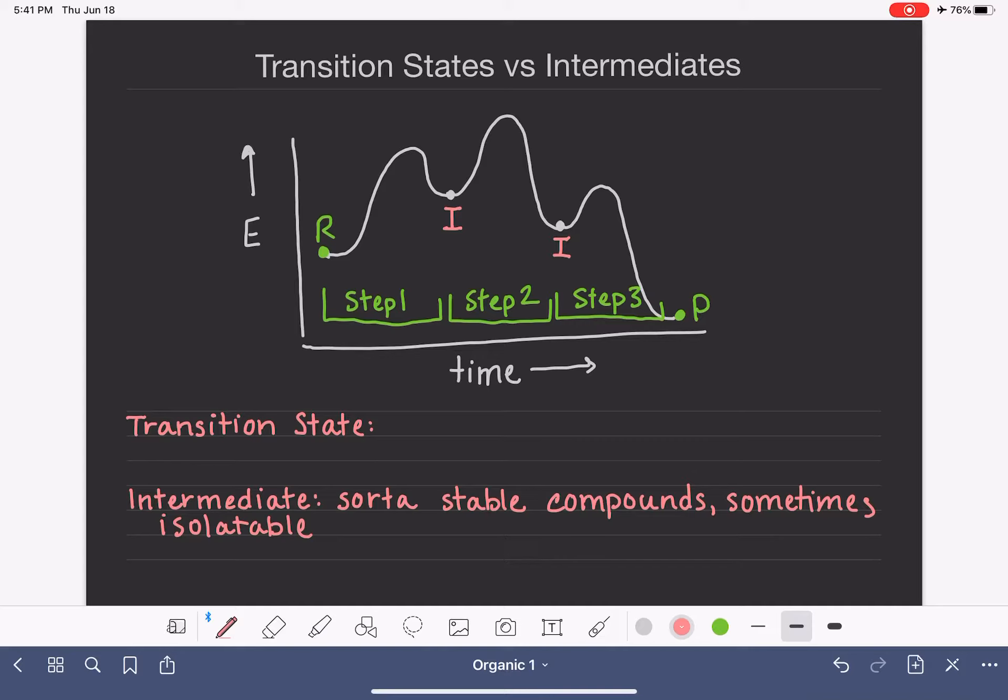So what does that mean? Well, that means if you're actually doing this in the lab, sometimes, depending on time, you could do step one in a day and you could take this intermediate and put it in a container and bottle it up and save it for the next day. And then you could do step two and put this into a container, bottle it up and save it for another day. So sometimes, not always, sometimes these intermediates are isolatable, sort of stable compounds, sometimes isolatable, and they are formed in multi-step reactions.